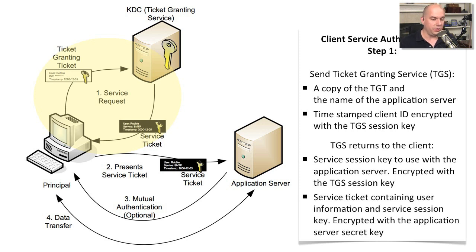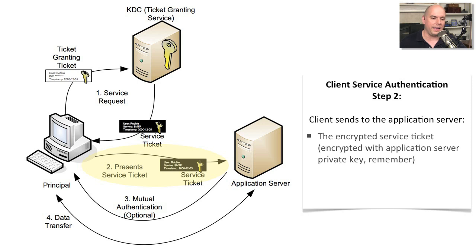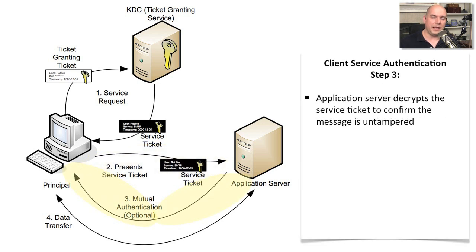You're getting a service ticket that has your user information, service session key information, and it's encrypted with the application server's secret key. At this point, you have a lot of encrypted data that you can't even read yourself — you're just going to pass it along to the application server, and the application server will be able to decrypt it because all of the keys are synchronized on the ticket granting service. You'll send off that information to the application server along with a time-stamped authenticator encrypted with the service session key. Once the application server receives this, it begins to decrypt the data to confirm that the message wasn't changed in any way along the line.